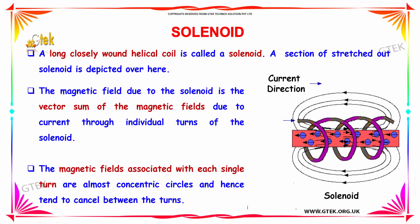Now let's talk about the solenoid. A long closely wound helical coil is called a solenoid. A section of stretched out solenoid is depicted over here. This is a solenoid. The magnetic field due to the solenoid is the vector sum of the magnetic field due to current through individual turns of the solenoid.